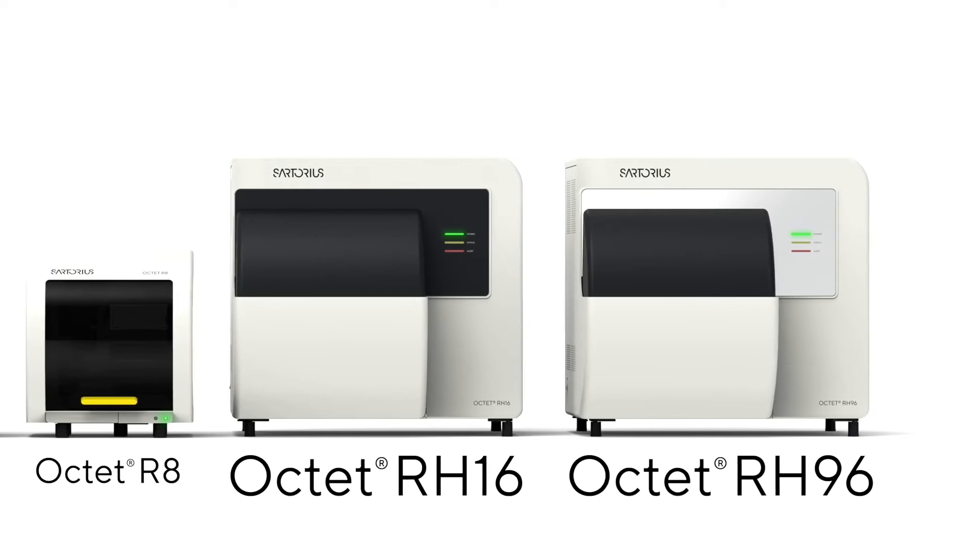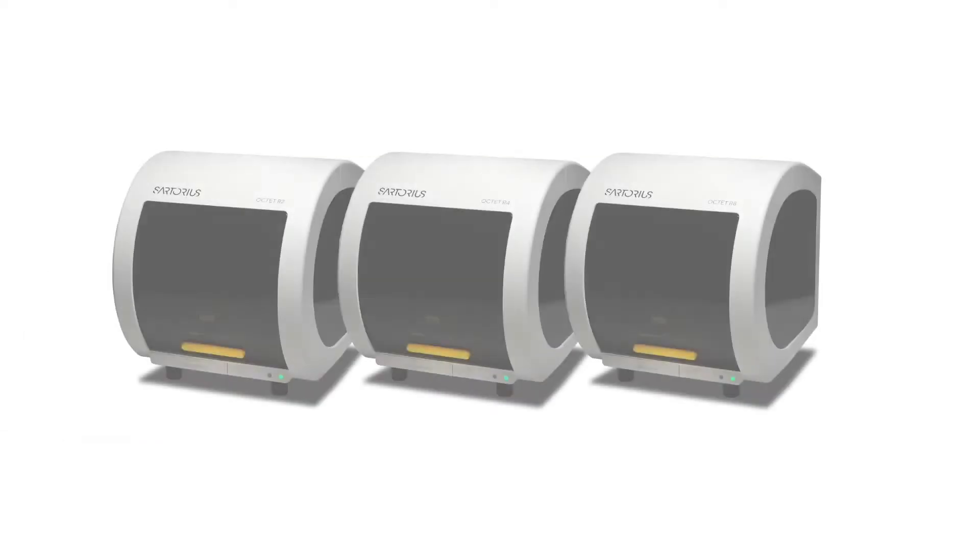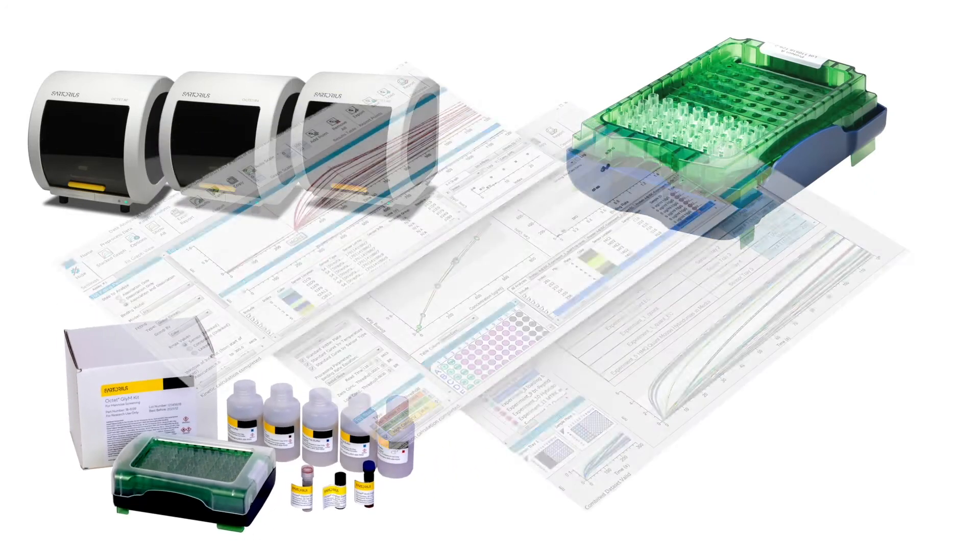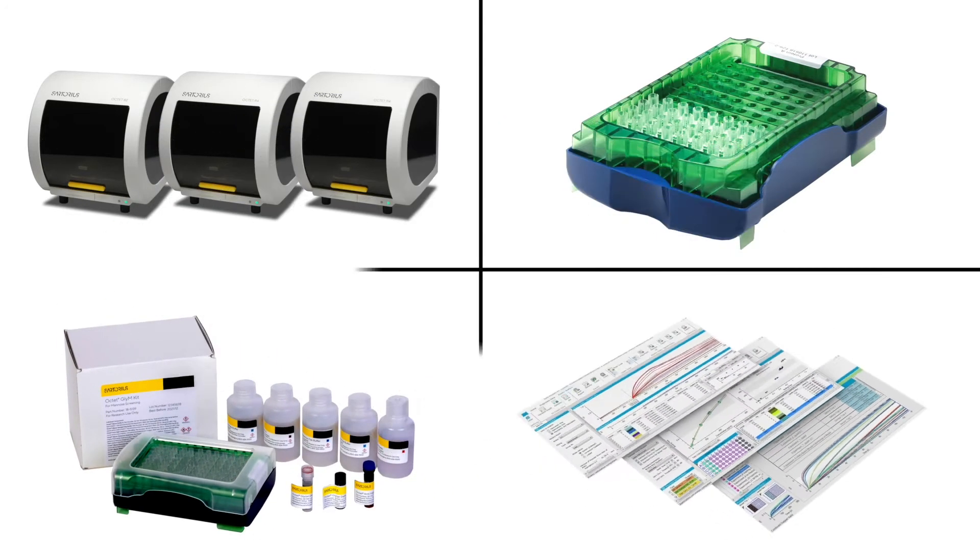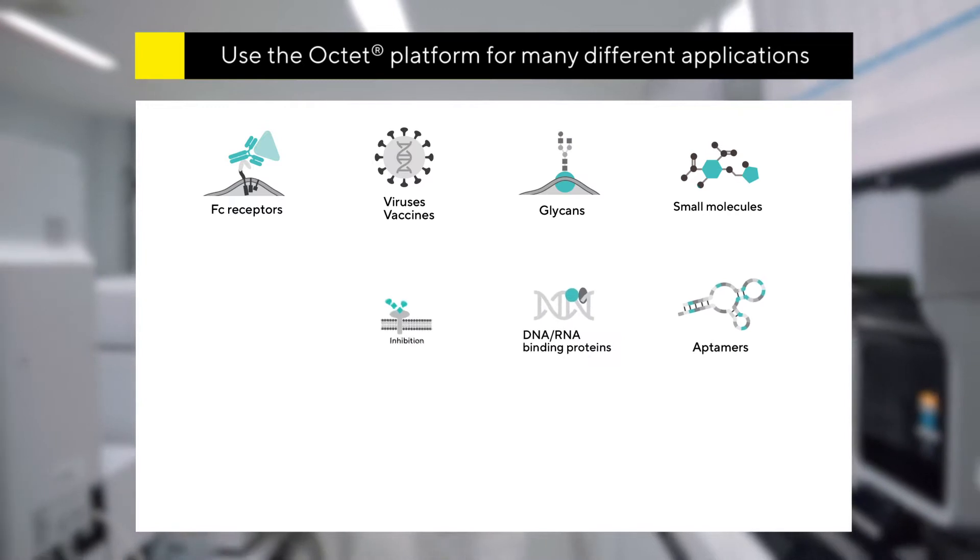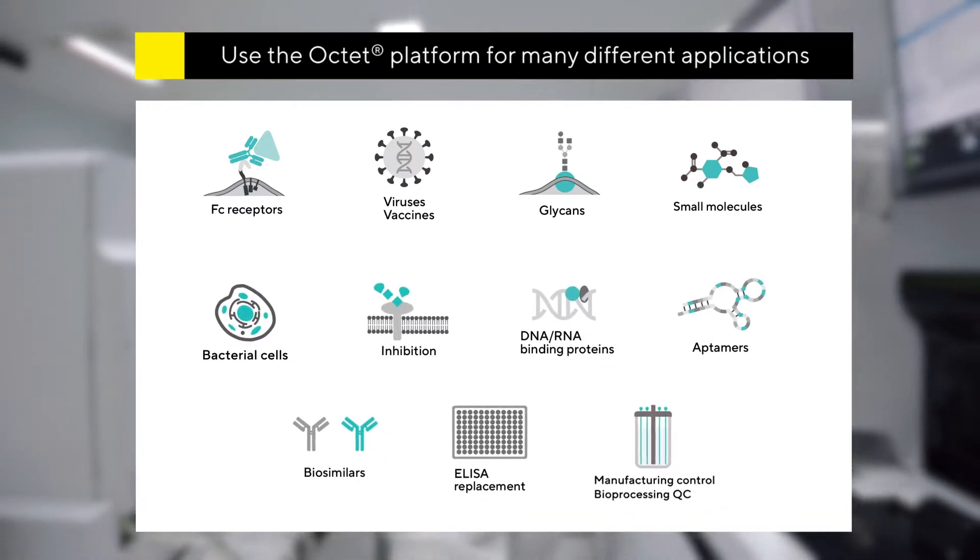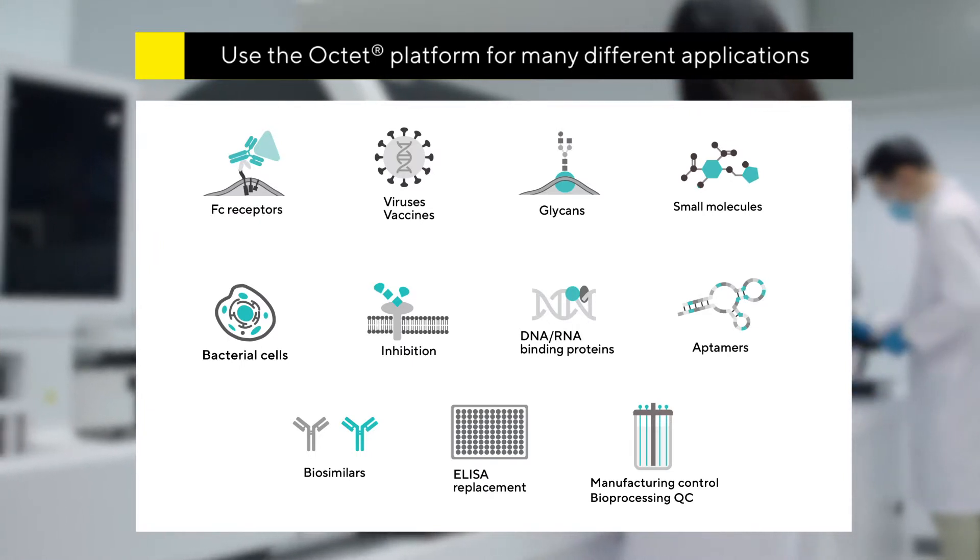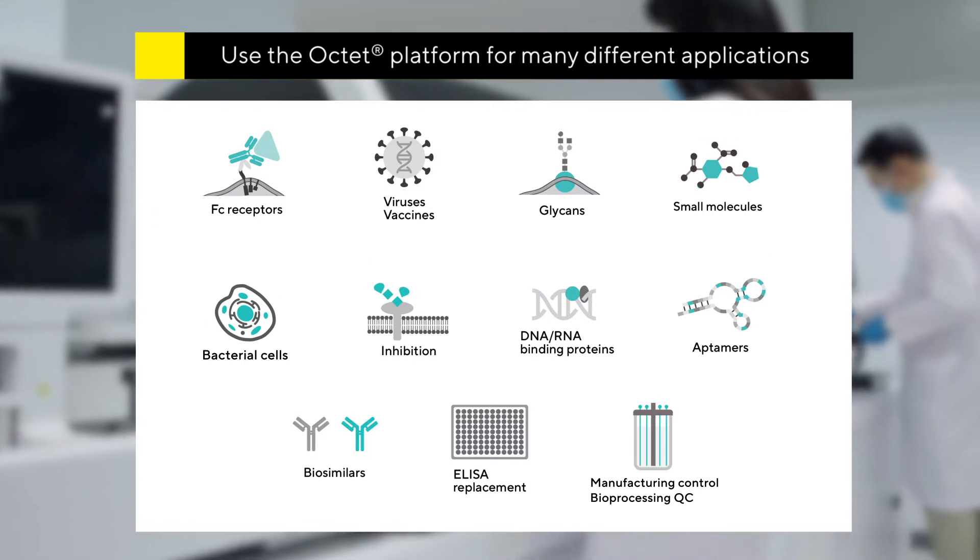The BioLayer Interferometry Platform includes instruments, biosensors, reagents, assay kits, and software to measure binding affinities, kinetics, and concentrations in real time. This integrated solution makes it significantly faster and easier to perform robust characterization of biomolecules and drug candidates, accelerating workflows and delivering stress-free data for early decision-making.